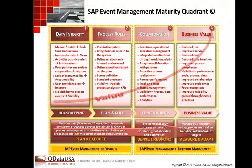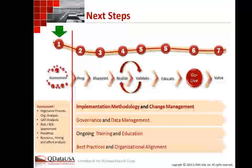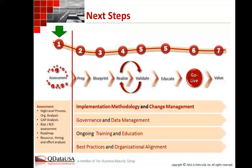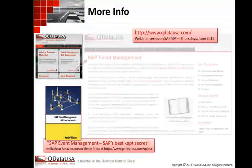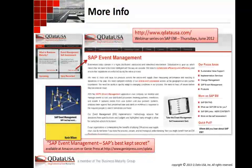In terms of next steps, if you're interested in event management, we go through what we call a scoping assessment where we look at your high-level processes, do an organization analysis, a gap analysis, a risk ROI assessment, and ultimately provide a roadmap toward achieving that value with an indication of resources, timing, and effort. If you're looking for more information, we have event management content on our website at QDataUSA.com, and we also have a book available at geniepress.com slash qdata.